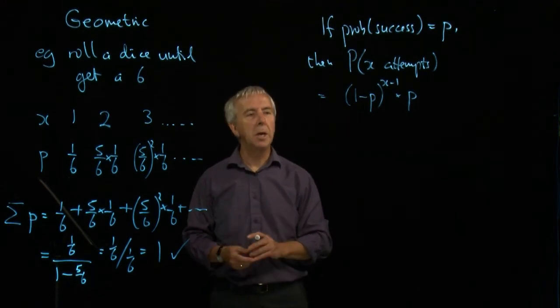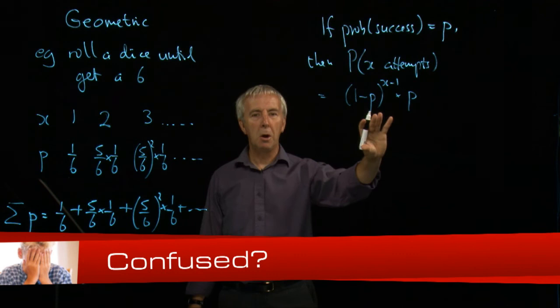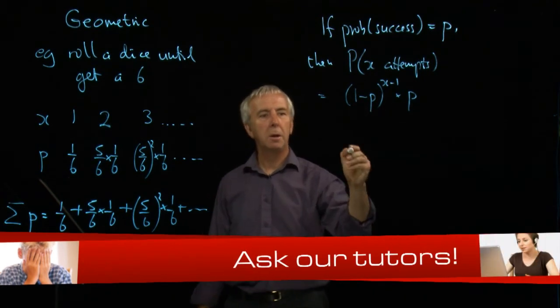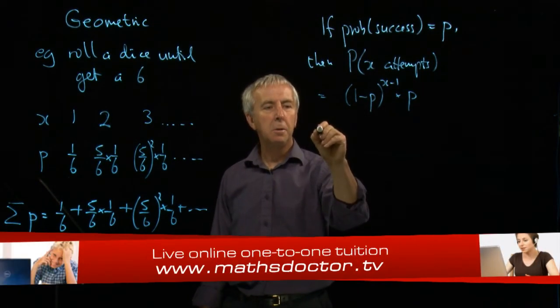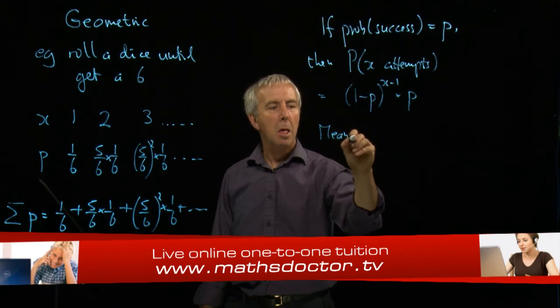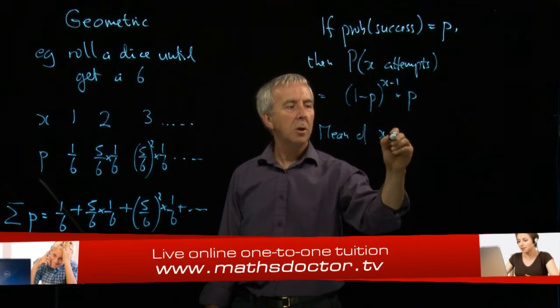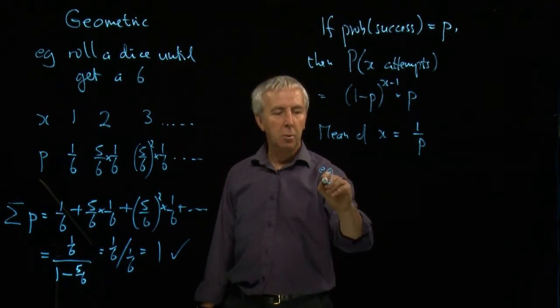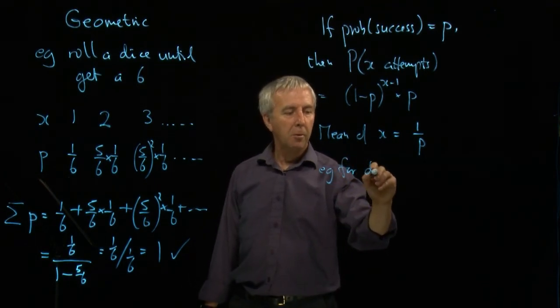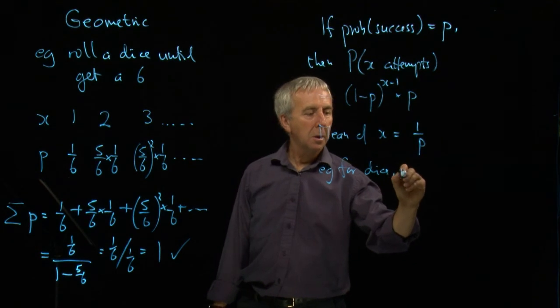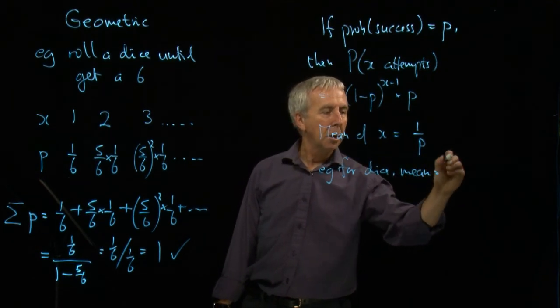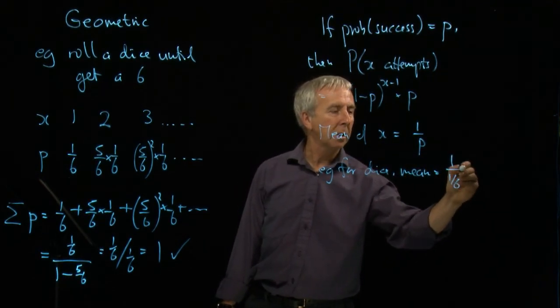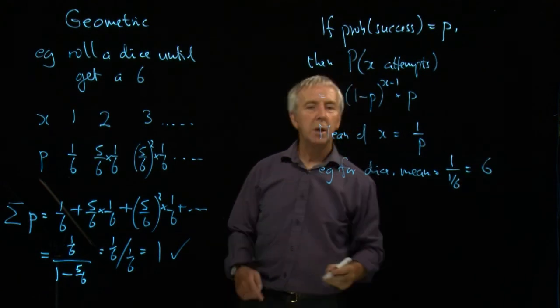We can work out the mean, and I'll just give you the result. It's quite an intuitive idea. The average value, the mean of x, turns out to equal one over p. So for example, for dice, the mean is one over a sixth, which of course is six.